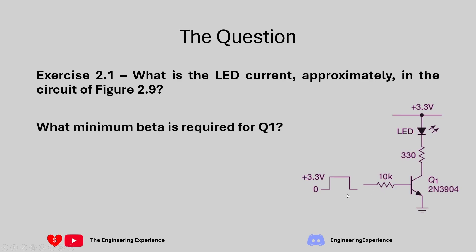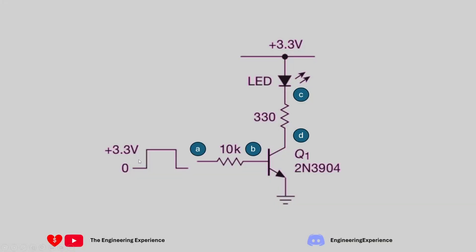Exercise 2.1 asks: what is the LED current approximately in the circuit of figure 2.9? And what is the minimum beta required for Q1? We have a 3.3 volt driving signal, which we can assume is coming from a microcontroller, and a resistor of 10 kilo ohms on the base of this NPN transistor.